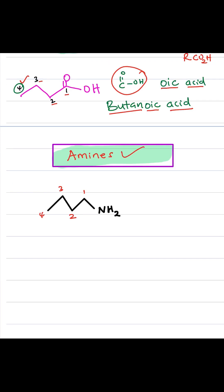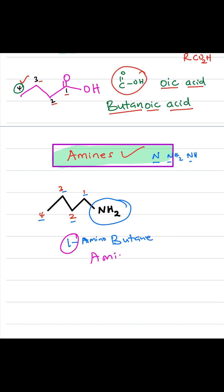Last one: amines. Amines contain nitrogen — NH2 or NH groups. In this case, we have NH2 connected to carbon number 1, then 2, 3, and 4. So we have 4 carbons, and the name is butane, then we say 1-amino — aminobutane. Because it's on carbon number 1, we don't even have to say that 1, so just aminobutane. Some people name it as an alkylamine, so in that case it would be butylamine.